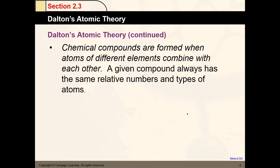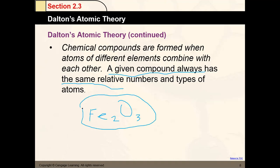Chemical compounds are formed with atoms of different elements combined with each other, and a given compound will always have the same relative number of atoms. Dalton observed that iron three oxide will always have the same formula — Fe₂O₃, nothing else. Similarly, sodium oxide is always going to have the formula Na₂O. Compounds have authentic and unique ways how to be written — there are no multiple ways to write the same compound.